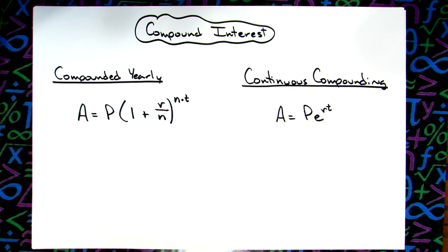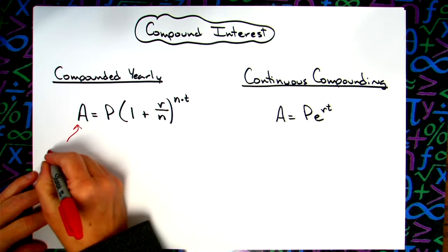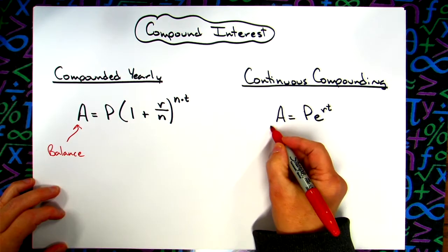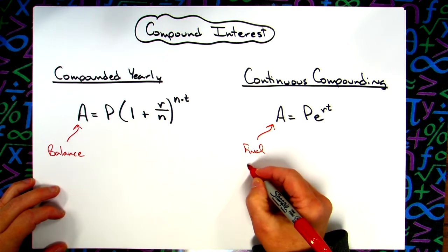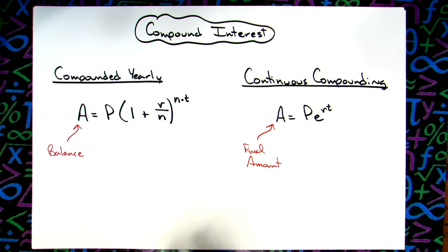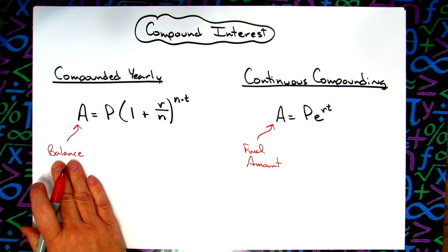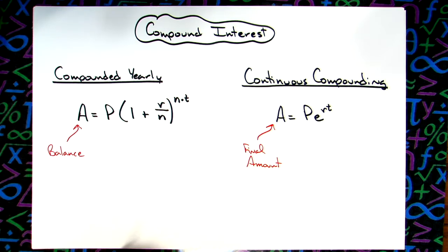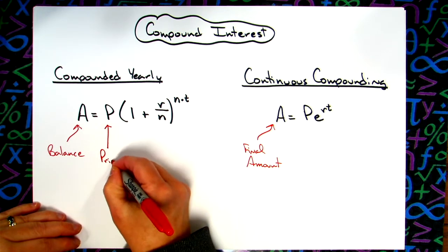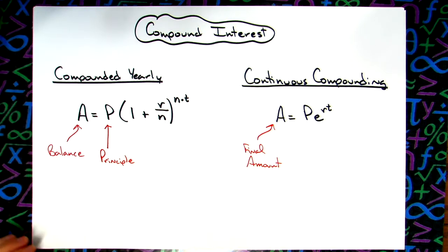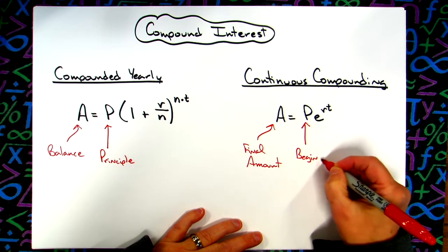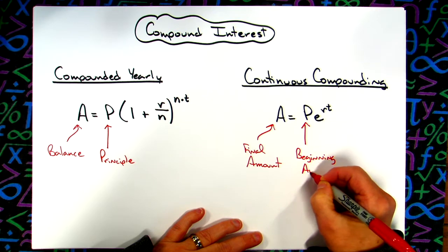In both of these, the A stands for the balance in the account after whatever your time period is that you have your investment. That A is the final amount in the account after six months, after a year, after two years. In both scenarios your P is your principal, or in other words it would be your beginning amount.